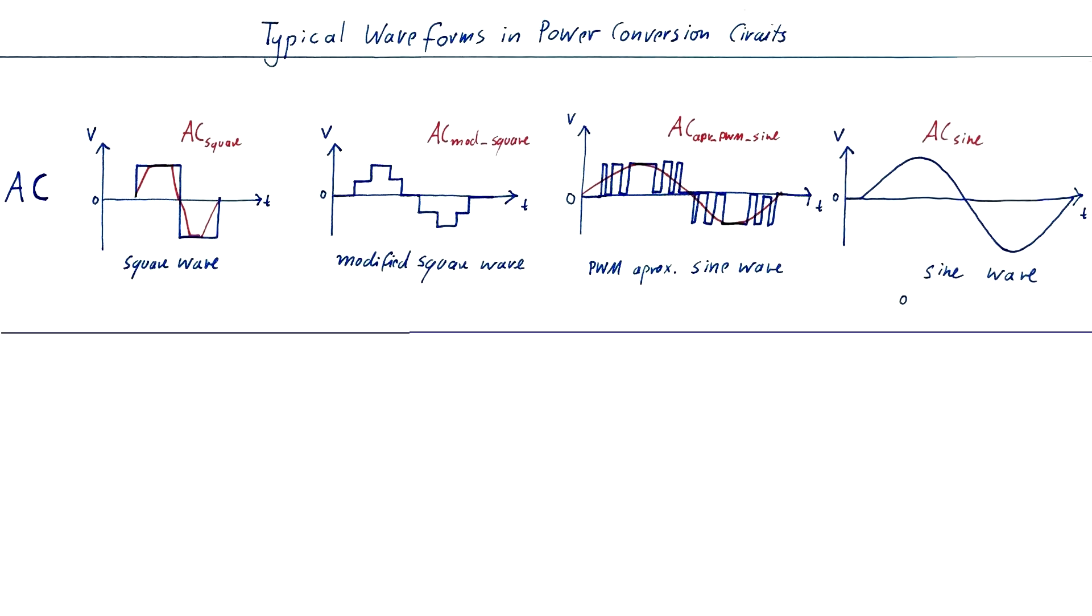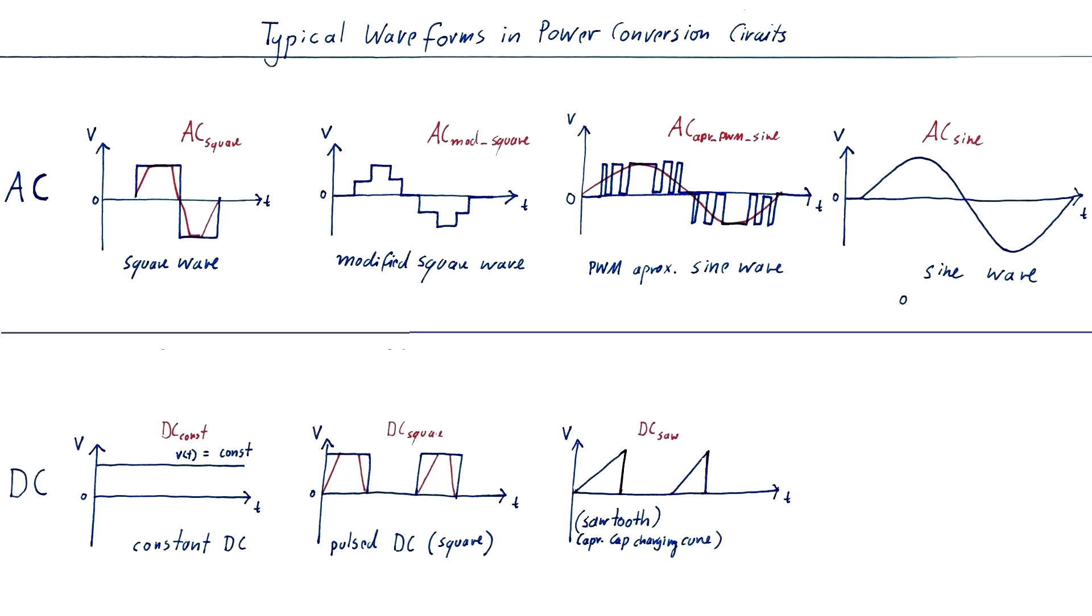As for the DC voltages, we will find constant values, but also pulsed DC voltages in different shapes, most commonly the square wave, which again has actually the form of a trapezoid. Then, pulsed DC in the form of a sawtooth, which is often just a simplification of an exponential function, like the charging curve of a capacitor. Also often found are DC voltages in the shape of the positive or negative half of a sinusoid.